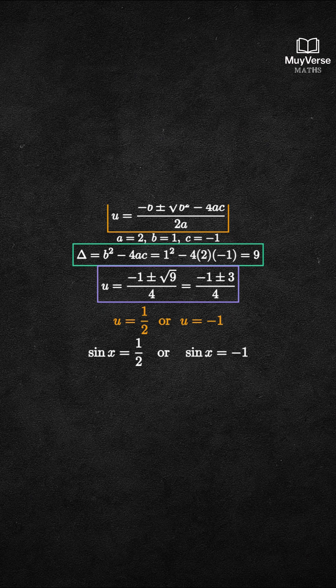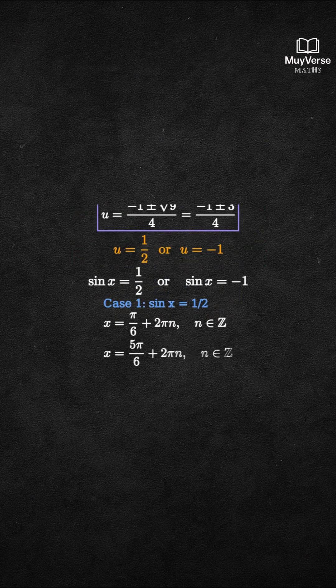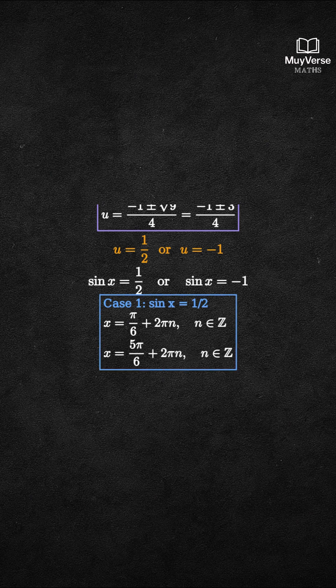Step 4: Write the general solutions. First case: If sine x equals 1 half, then x equals pi over 6 plus 2 pi n, or x equals 5 pi over 6 plus 2 pi n.